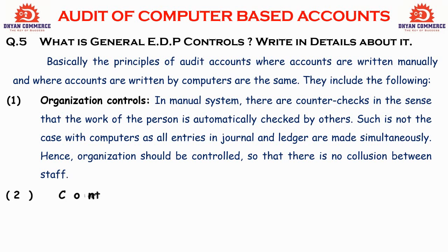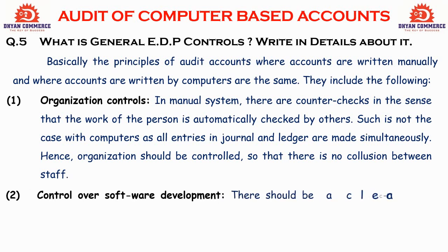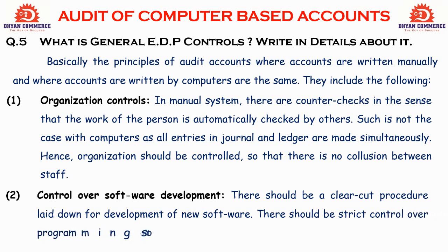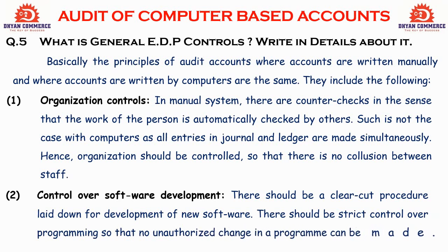The second control is control over software development. In ADP control, this is very important. There should be a clear-cut procedure written down for the development of new software. There should be strict control over programs so that no unauthorized changes can be made. If your software is good, the controlling will automatically be good.